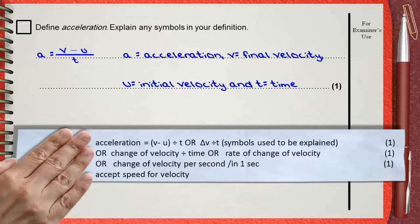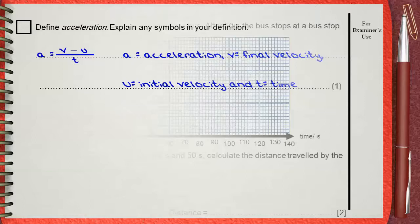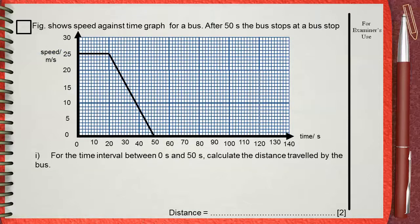Also, the use of the term speed instead of velocity will be accepted, even though the use of velocity is more accurate than the use of speed. Next question: Figure shows a speed against time graph for a bus. After 50 seconds, the bus stops at the bus stop.